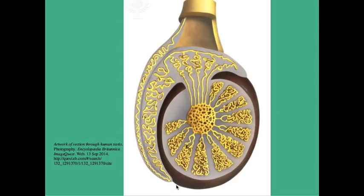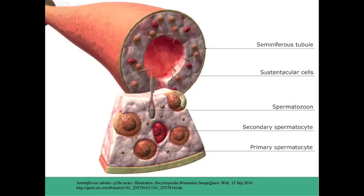The events of sperm development begin inside the testes and under the influence of follicle stimulating hormone. FSH cells in the epithelial lining of the seminiferous tubules divide by mitosis and mature into primary spermatocytes before undergoing a halving of their chromosome number by the reduction division of meiosis.